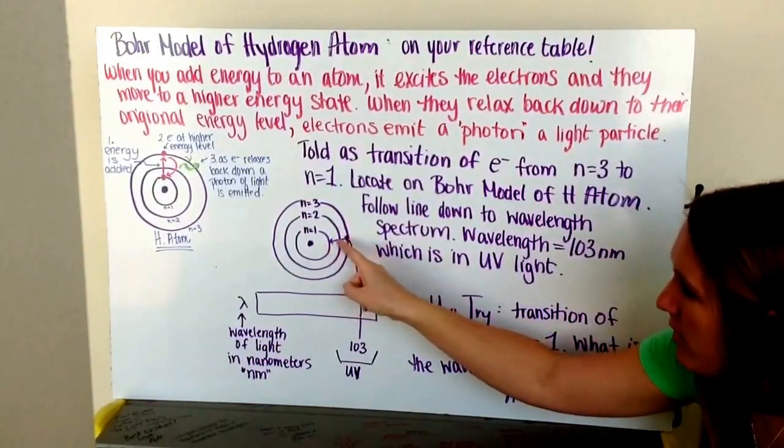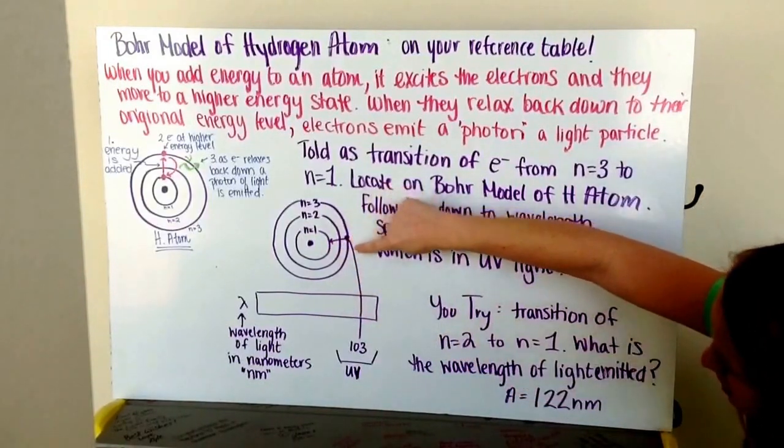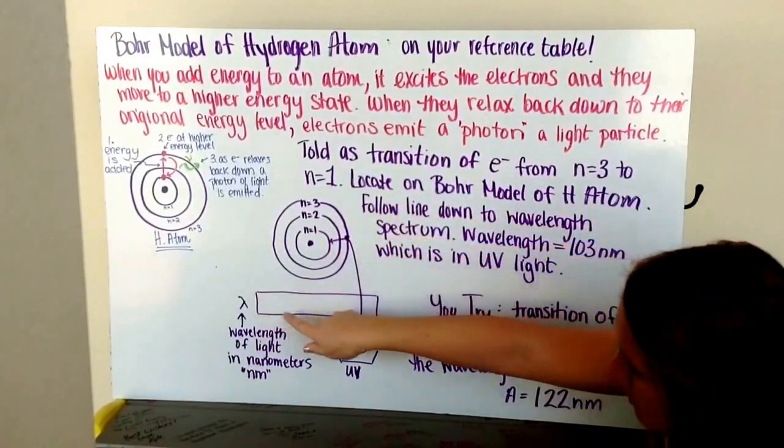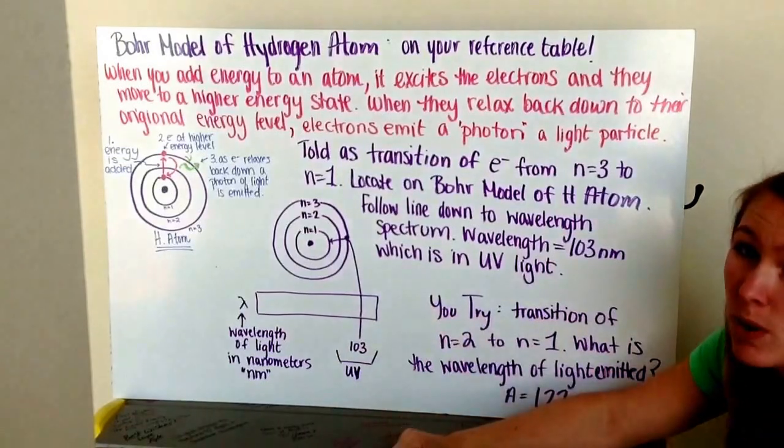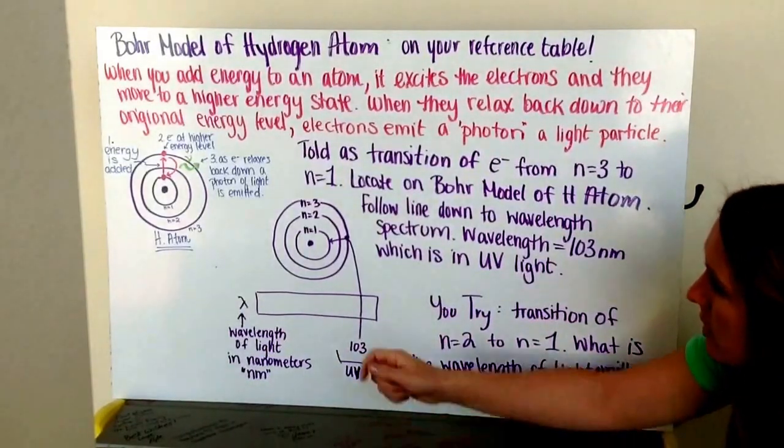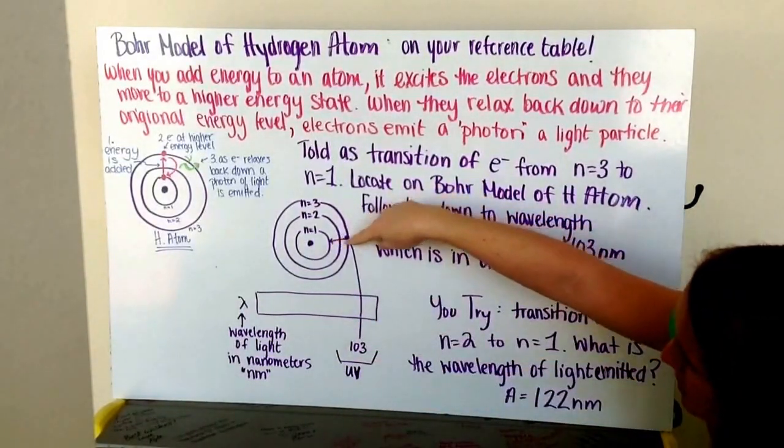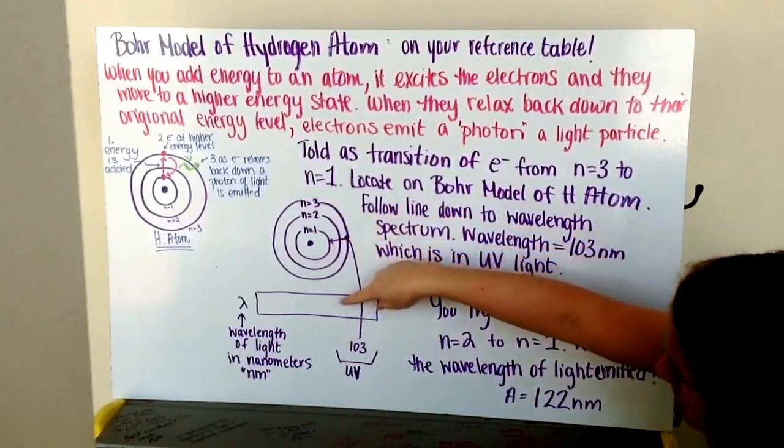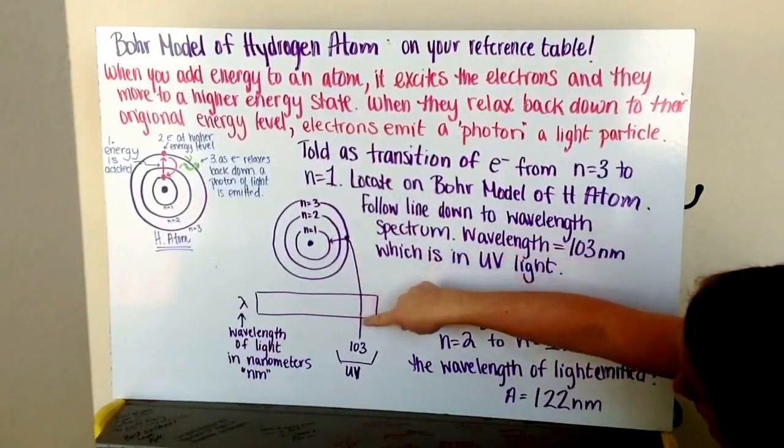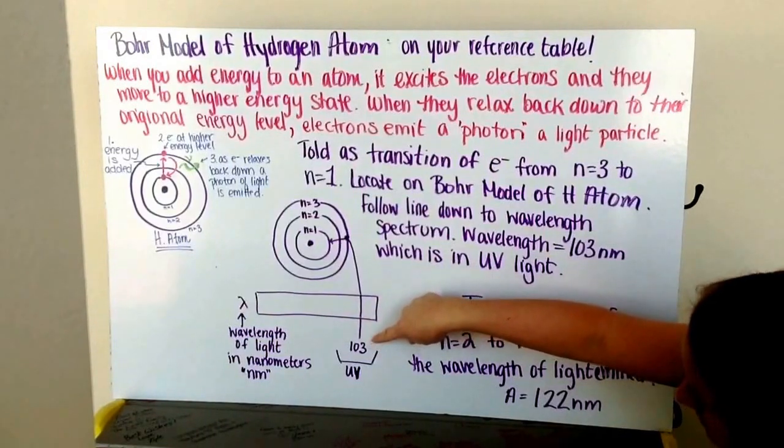You can notice that there's an arrow there pointing down. And there's another line that comes down to the electromagnetic spectrum, which tells you what wavelength of light it's associated with. So we find our line of n equals three to n equals one, and we follow it down to this little bar that we have at the bottom. And underneath that, it tells us the wavelength of light.